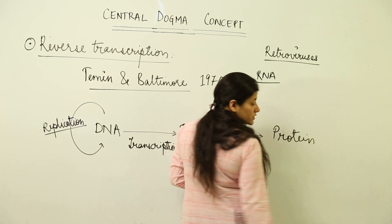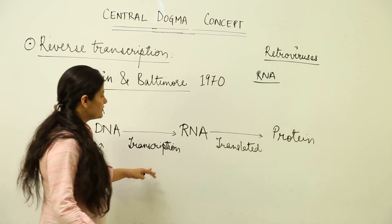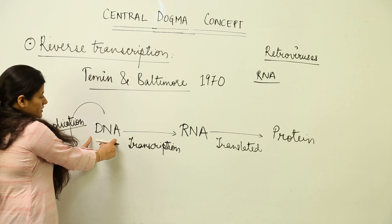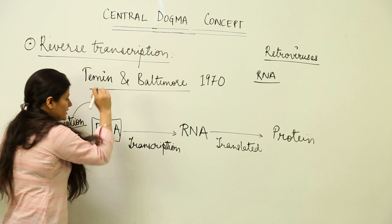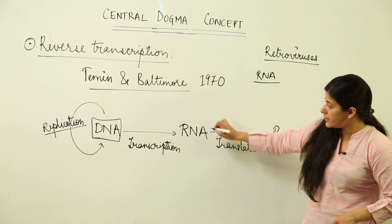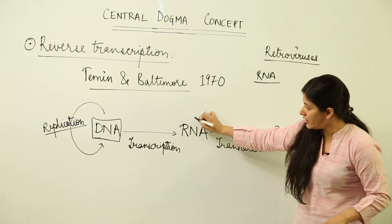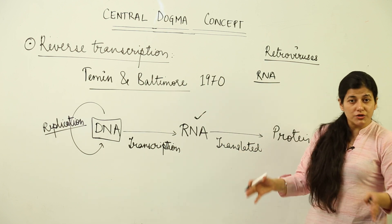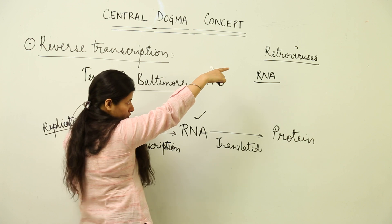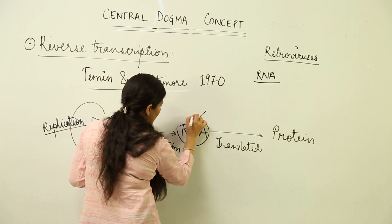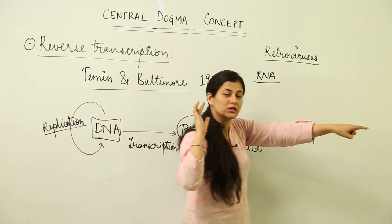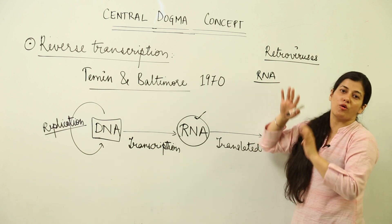You get to know a new term — codons — but we'll see what it is in subsequent lessons. So for now, we have the central dogma concept: the self-replicating molecule is responsible for the perpetuation of the organism. Now suppose the organism has RNA as the genetic material and DNA is not present. We have observed in certain tumor-causing viruses and retroviruses that these viruses have RNA as their genetic material.